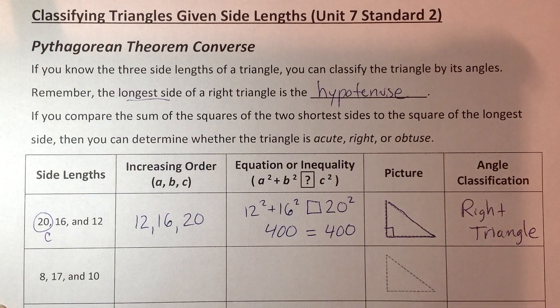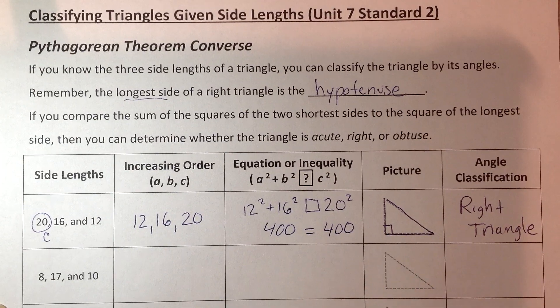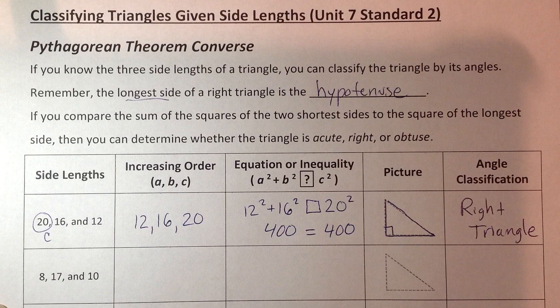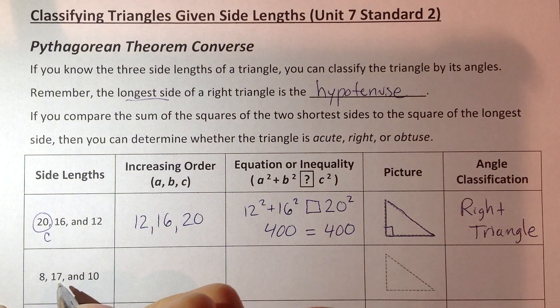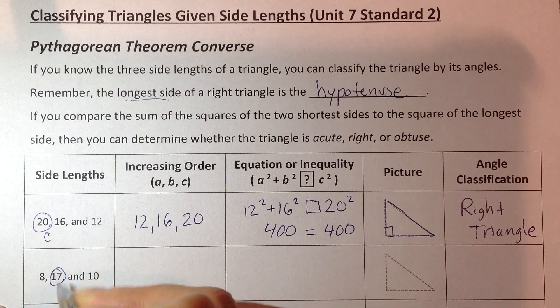Most people don't have trouble remembering that that's going to be a right triangle. It's when they're not equal. I'm going to kind of show you a trick for that. So find our longest side. Let's look at the next example. Our longest side is 17.